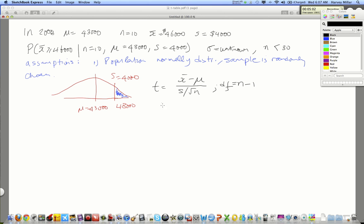So, let's substitute our values. t is equal to the sample mean was 48,000. The population mean, we believe, is 43,000. And then, our sample standard deviation is 4,000. And we divide that by the square root of n, which is 10.